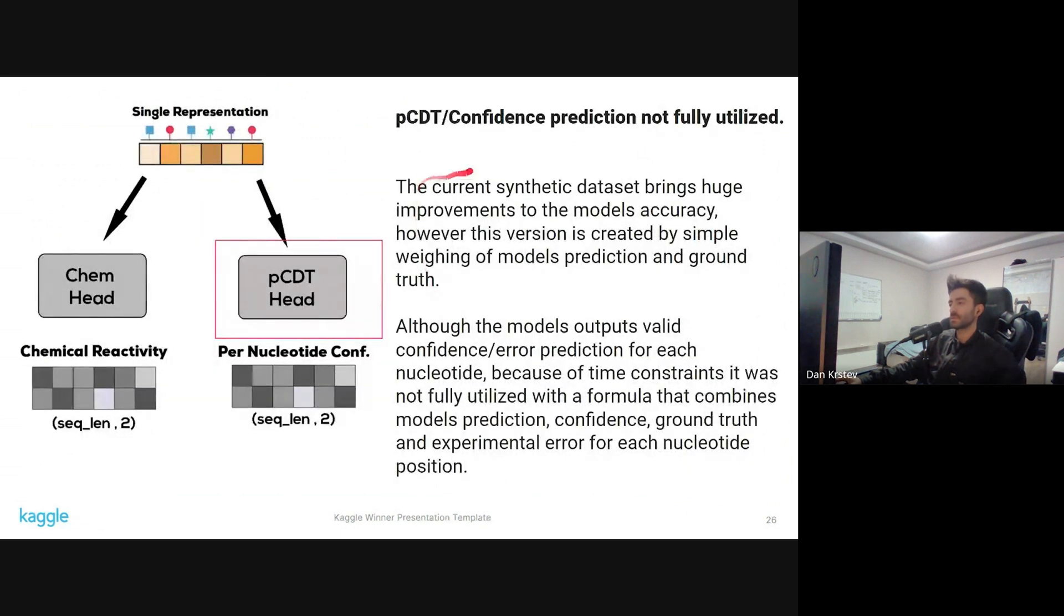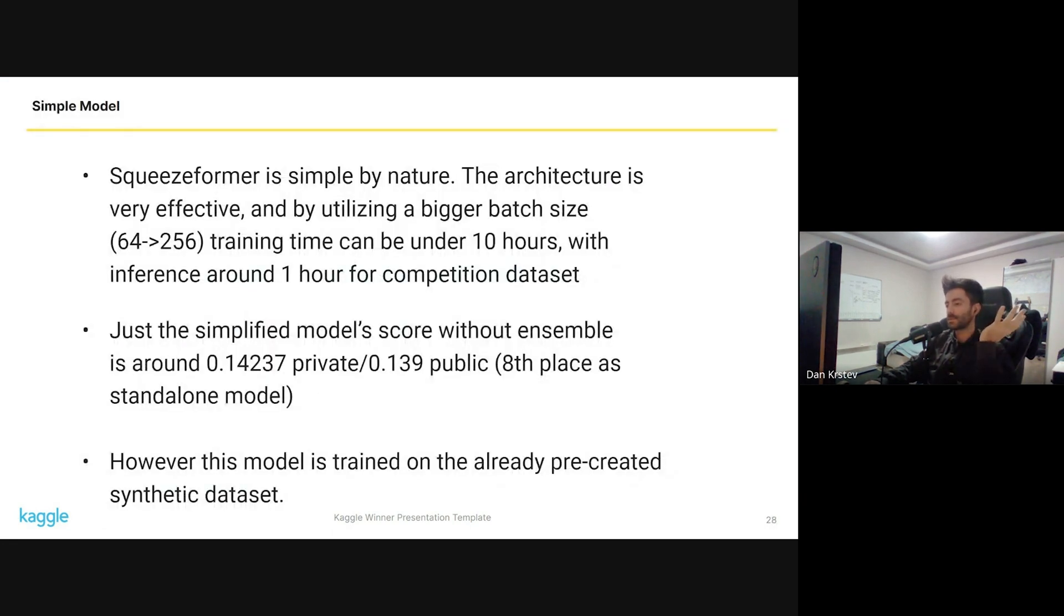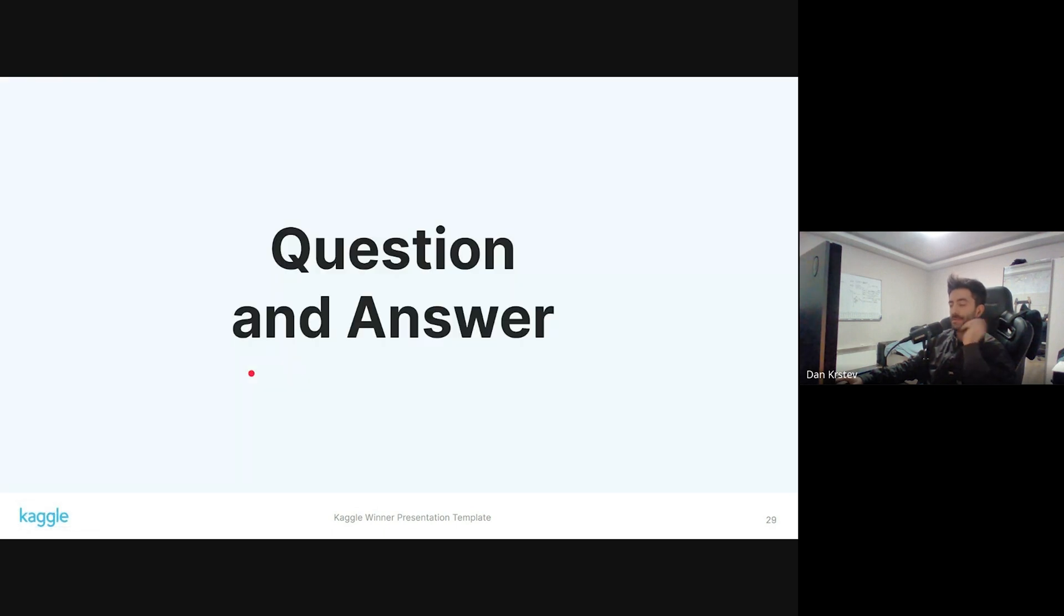I just want to say that during the competition, the current synthetic data set was not utilized to the full options of the confidence prediction. I didn't have time to make a good formula that can combine the model's prediction, the confidence about the prediction, ground truth, and experimental error. So the current synthetic data set is not the best. It's created by weighing of the ground truth and the model's prediction. We are asked about simple model. I think the Squeezeformer model is simple by nature. It can be trained under 10 hours if used with bigger batch size, and it has a pretty good private score, 8th place standalone model. That's it.